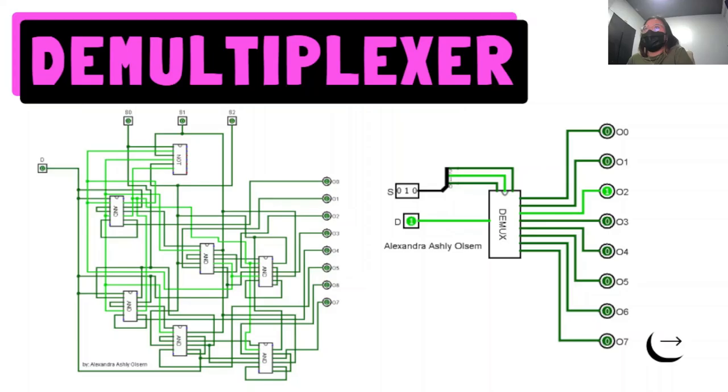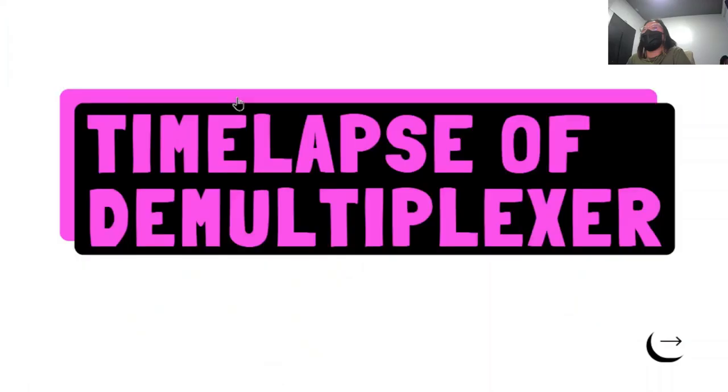For the multiplexer, it is a 128 multiplexer consists of four data input lines, two select lines and also a single output. Here is the time lapse of making the demultiplexer.